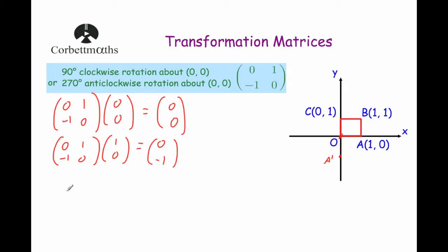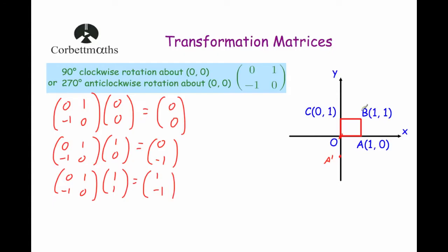Next, the point B, 1, 1. So we multiply the matrix 0, 1, minus 1, 0 by the point 1, 1. Multiplying the first row by the column: 0 times 1 is 0, 1 times 1 is 1, adding them together gives 1. Then minus 1 times 1 is minus 1, 0 times 1 is 0, adding them together gives minus 1. So the point B will be rotated 90 degrees clockwise about the origin to the point B dash, which is 1, minus 1.